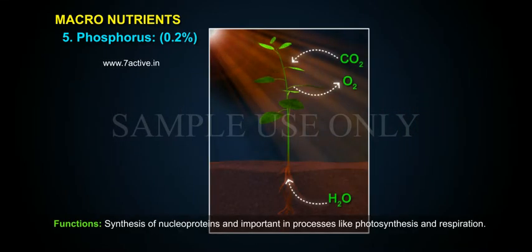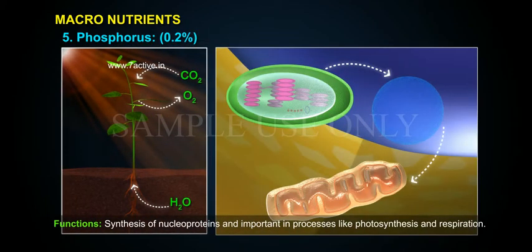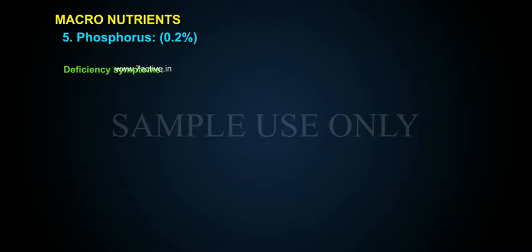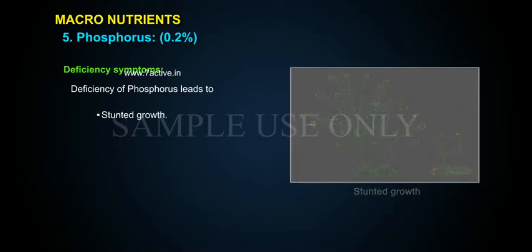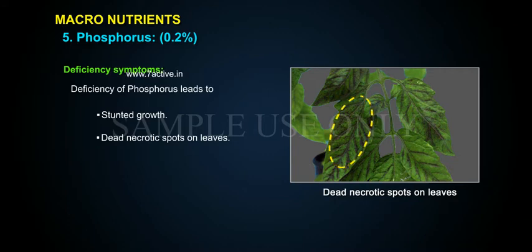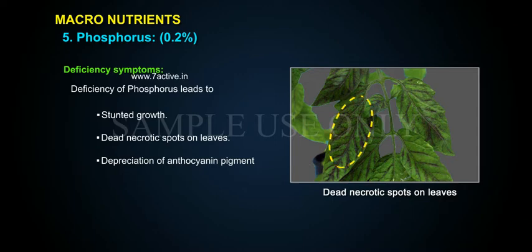Functions: Synthesis of nuclear proteins; important in processes like photosynthesis and respiration. Deficiency Symptoms: Deficiency of phosphorus leads to stunted growth, dead necrotic spots on leaves, depreciation of anthocyanin pigment, and delayed flowering.